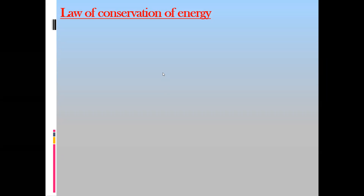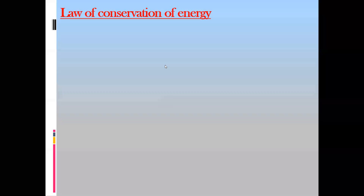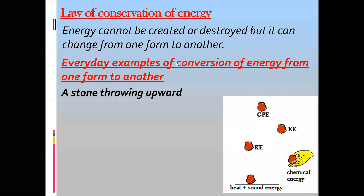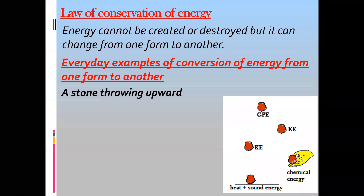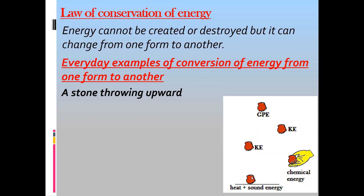The conservation of energy states that energy cannot be created nor destroyed, but changes from one form to another. For example, a person has chemical energy; they push a rock vertically upward so it will have kinetic energy. When it reaches a certain height it will have gravitational potential energy. As it returns back it will have kinetic energy, and once it hits the ground that will be heat and sound energy.